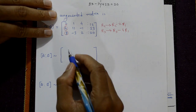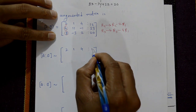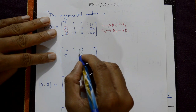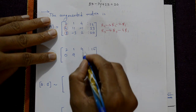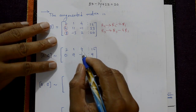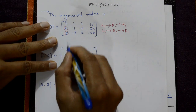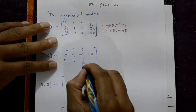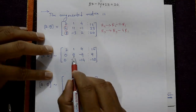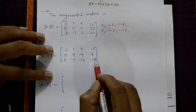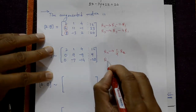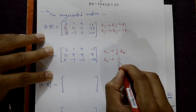Applying the row operations: first row stays the same. For R2 = R2 minus 2R1: first element is 0, second is 9, third is minus 9, and B2 is 9. For R3 = R3 minus 4R1: first element is 0, second is minus 7, third is minus 14, and B3 is minus 28. Since 9 is common in R2 and 7 is common in R3, we simplify: R2 = (1/9)R2, and R3 = (-1/7)R3.